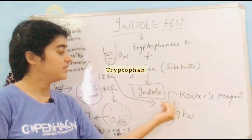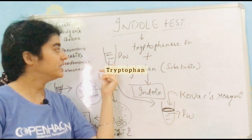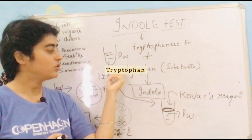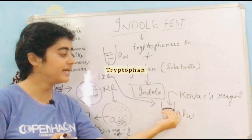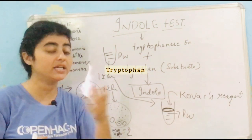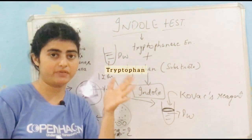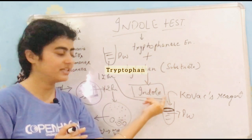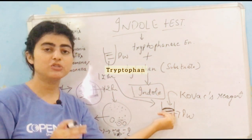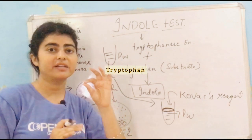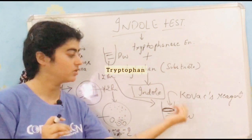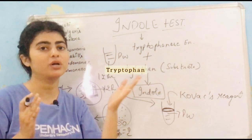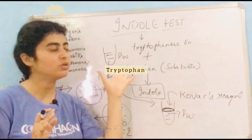If there is no indole — meaning the colony added to the peptone water does not produce tryptophanase — there will be no indole production. When Kovac's reagent is added in that case, there will be formation of a yellow-colored ring. This is all about the indole test.